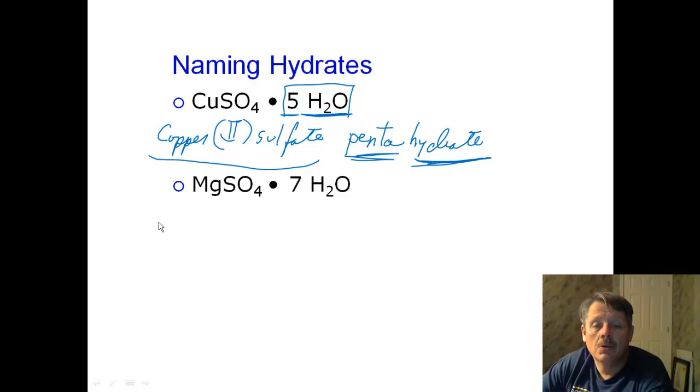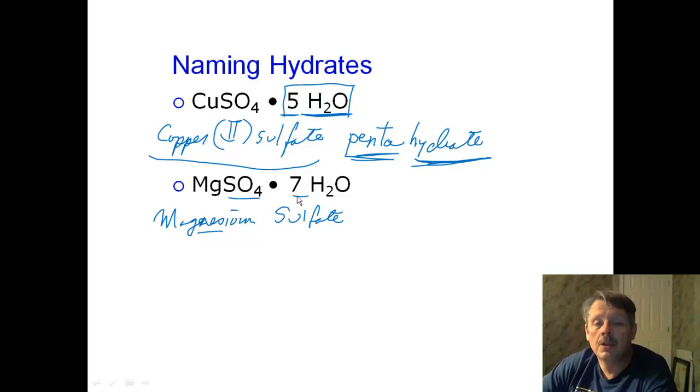If you look at this, you should be able to name this one. Pause the video and give it a try on your own. That's magnesium. Not to be confused with manganese. That is sulfate. Magnesium always takes on a plus-two charge. It's an alkaline earth metal, so we leave it alone. And then we try and remember what the prefix is for seven. Yep, that's the heptathlon one. So that's heptahydrate.